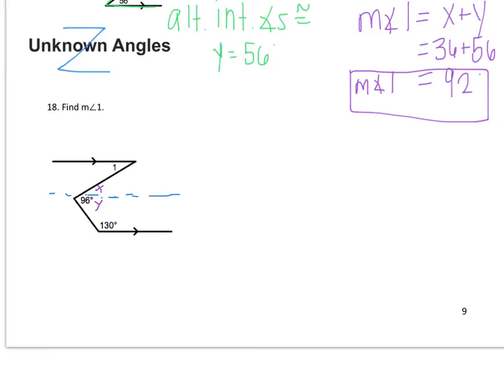But what I can do is first find Y. And I can do that by looking at my auxiliary line and one of the given parallel lines. Here again I have another case of same side interior angles.